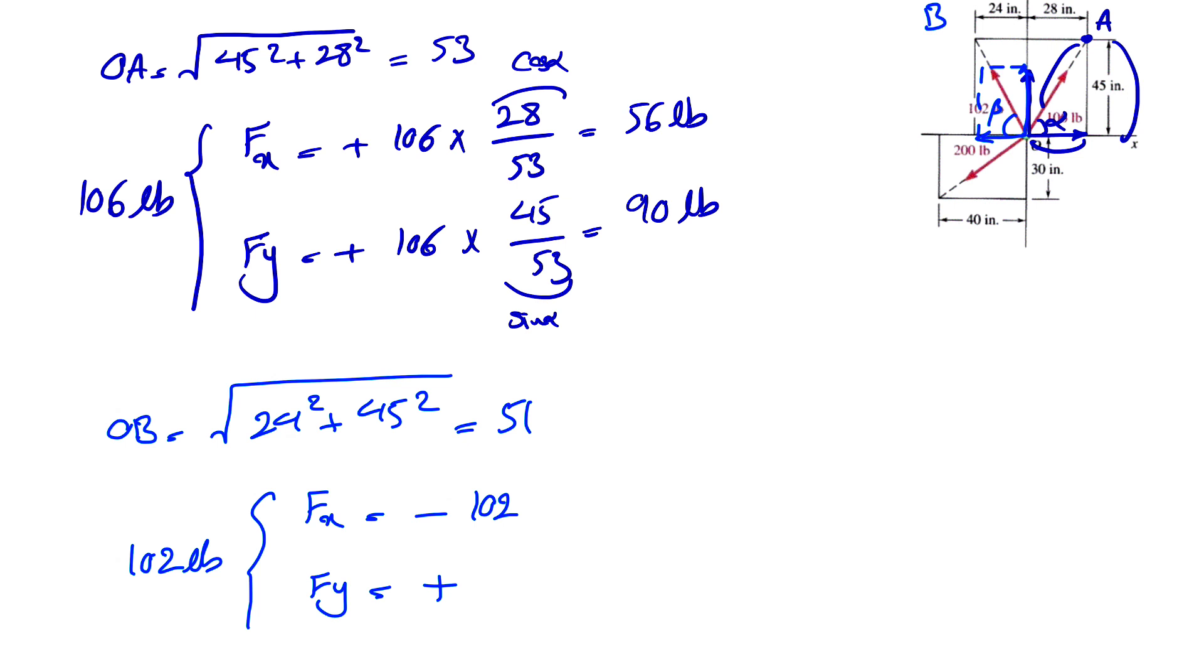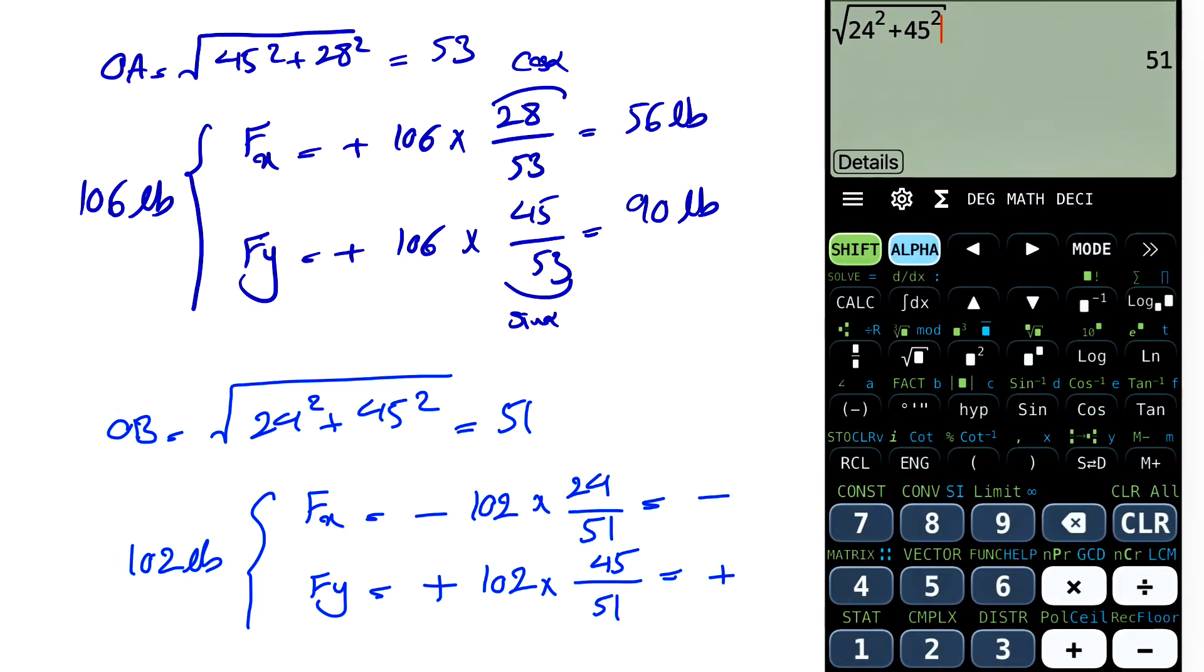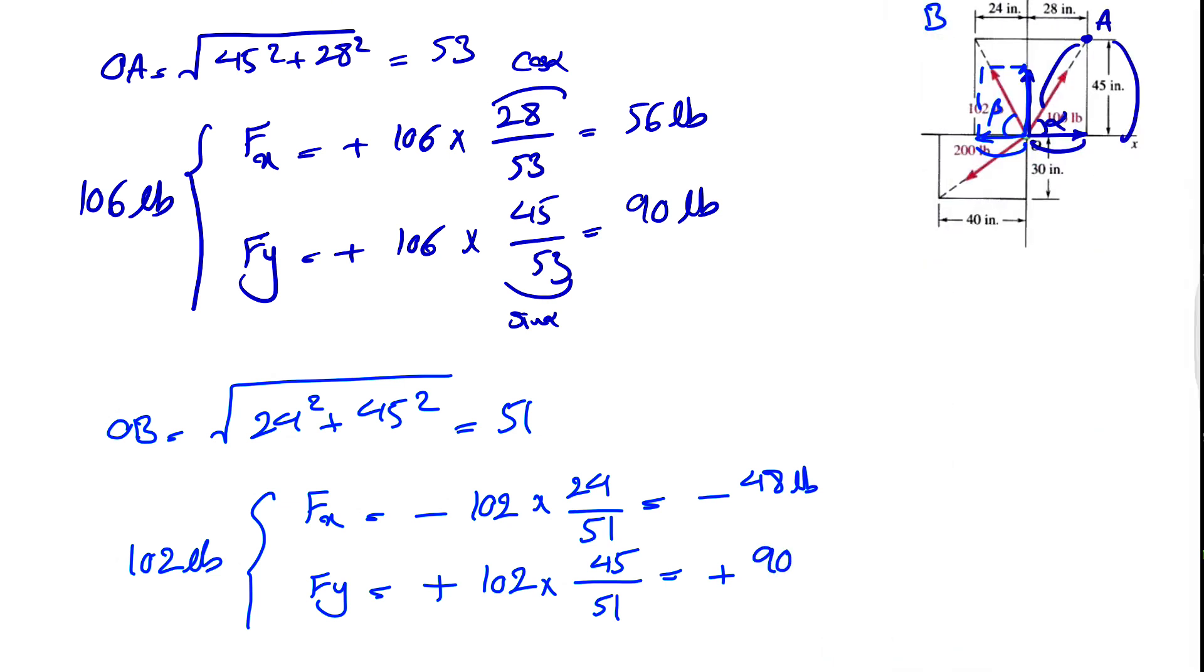And this will have the cosine of beta, which would be the adjacent 24 divided by the hypotenuse over 51. And for fy, we have 102 times the opposite, which is 45 over 51. So this will be negative, this positive. Let's calculate this first. So 102 times 24 divided by 51. That's going to be 48 pounds. And 102 times 45 divided by 51. That's going to be 90 pounds.